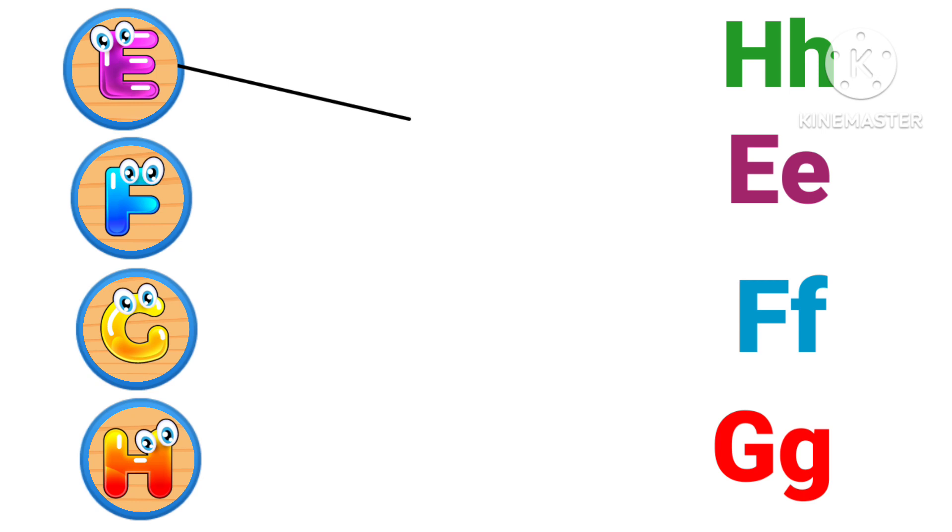E E for Elephant, F F for Fish, G G for Grapes, H H for Horse.